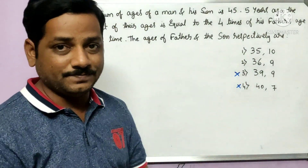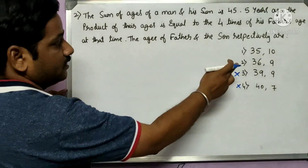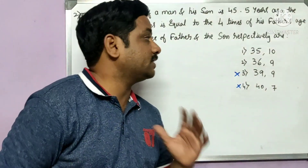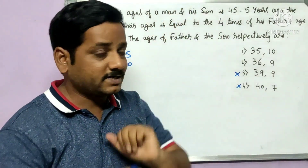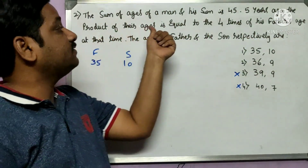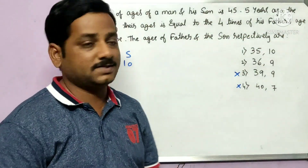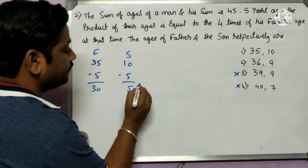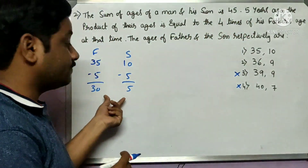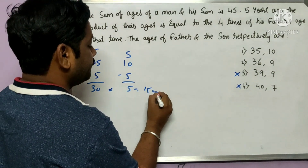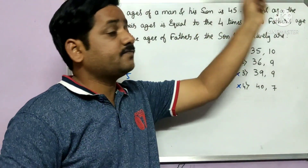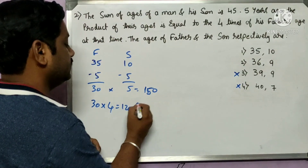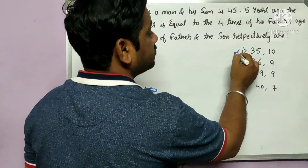From the remaining two options, test the first: father = 35, son = 10. Five years ago, father = 30 and son = 5. The product of their ages five years ago should equal four times the father's age at that time: 30 × 5 = 150, but 4 × 30 = 120. These are not equal, so this option is not valid.